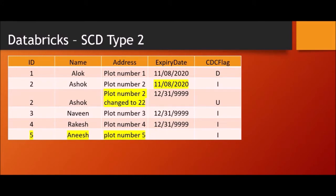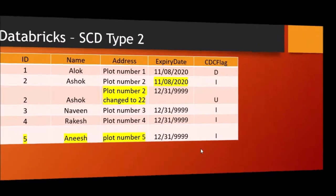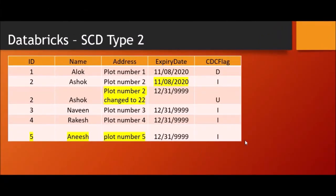Now we'll see after the merge as SCD type 2, how our table should look like. ID 1 which has been deleted should get updated and the expiry date should be updated with the current day or the day on which this job is running. ID 2 will still retain the previous data — we're not going to delete it, that is the property of SCD type 2 — but we have to mark it as expired. A new record will be inserted with the new address, which will have expiry date 12/31/9999. We identify active records based on the expiry date.